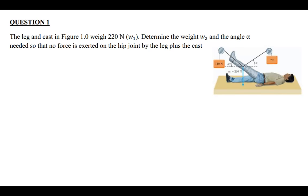Hi everyone, welcome to today's tutorial. In this tutorial, we're going to discuss this question here. It says the leg and cast in figure 1.0 weighs 220 newtons — that is W1. Determine the weight, which is W2, and the angle alpha needed so that no force is exerted on the hip joint by the leg plus the cast.